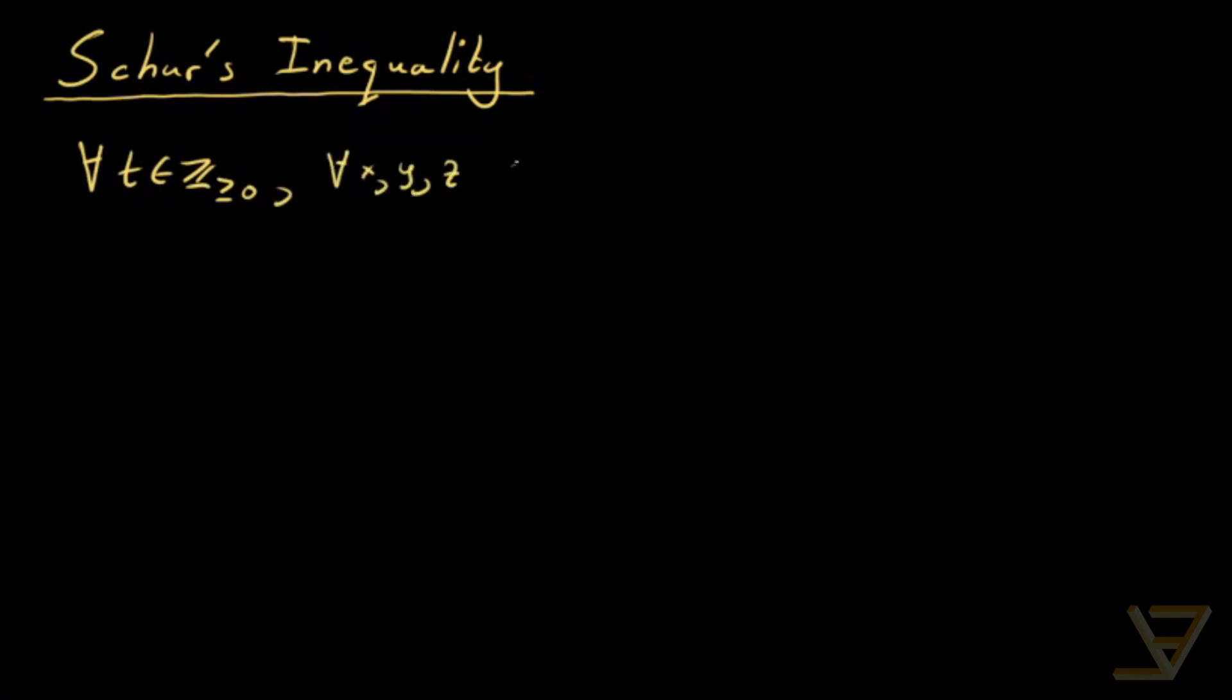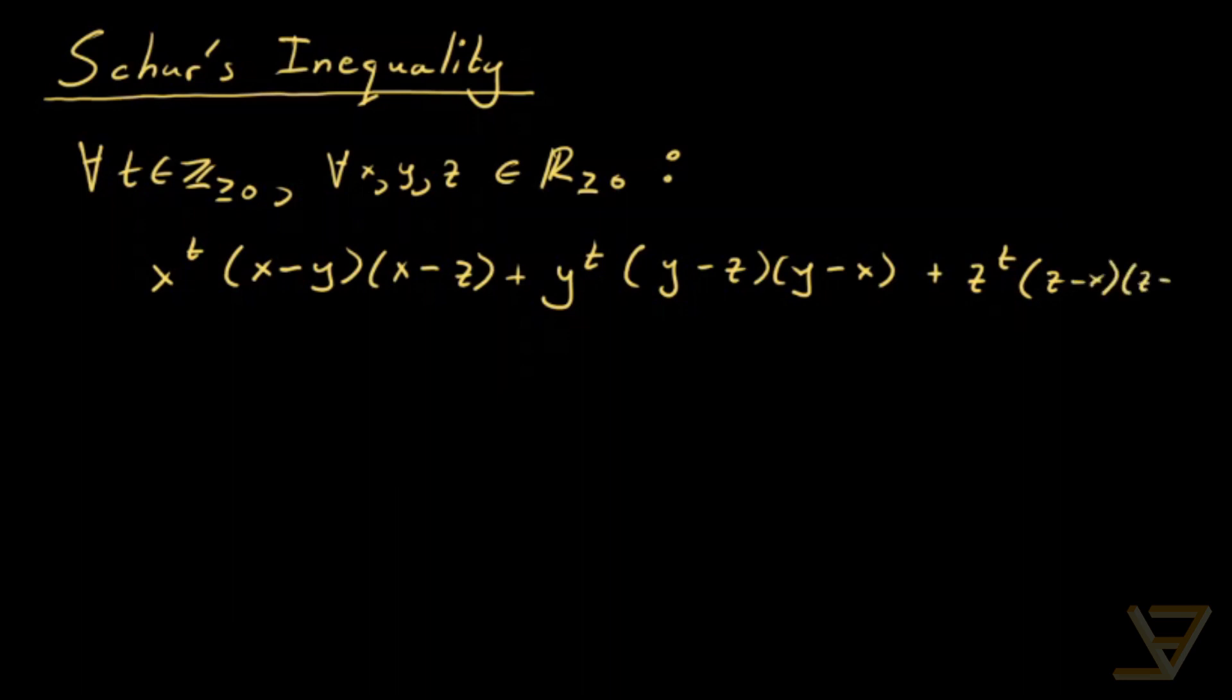it holds that x^t(x-y)(x-z) + y^t(y-z)(y-x) + z^t(z-x)(z-y) is non-negative. So basically, greater than or equal to zero.